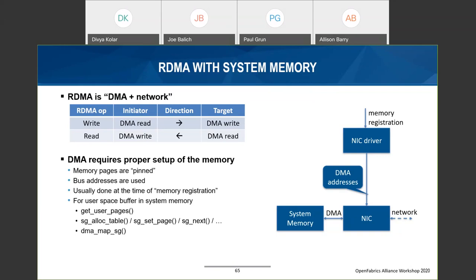We can see the flow chart of this operation: the NIC performs the DMA from system memory to the NIC packet buffer. In order to do this, the NIC needs to get the DMA address for the buffer. This is usually done in advance with a process called memory registration, where the NIC driver provides all the information needed to do the address translation and delivers the DMA address as a list to the NIC, which saves it internally into something like a memory translation table.